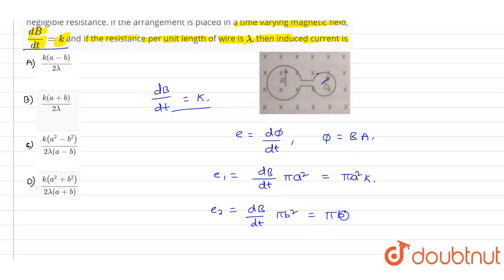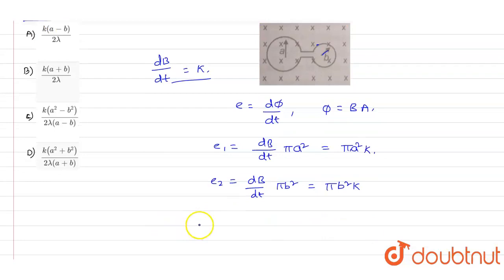The resistance value can be written as R equals (2πa + 2πb)λ.